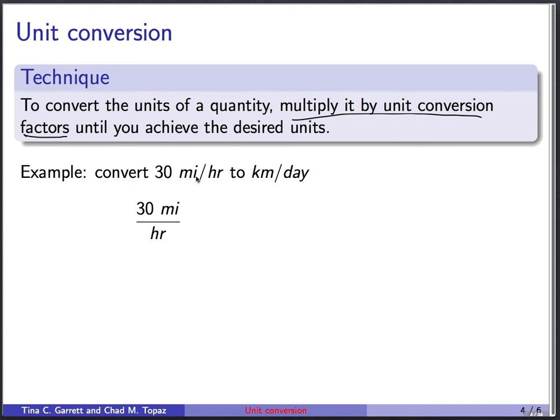We would like to convert 30 miles per hour to kilometers per day. So here we have 30 miles per hour. Way down the road we're trying to get to kilometers per day. So we're going to have to cancel out miles and replace it with kilometers, cancel out hours and replace it with days. And here's how we do it. We're going to multiply by 1.6 kilometers per mile. This has the effect of canceling out miles. This is a unit conversion factor.